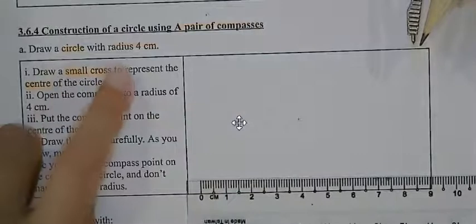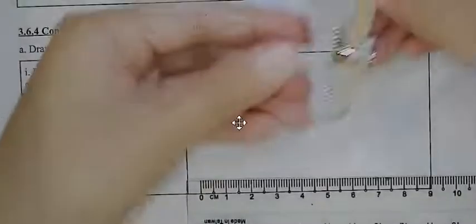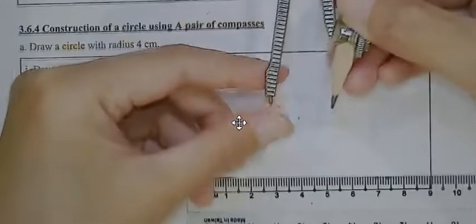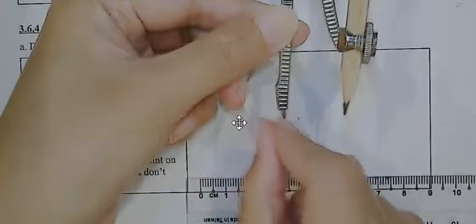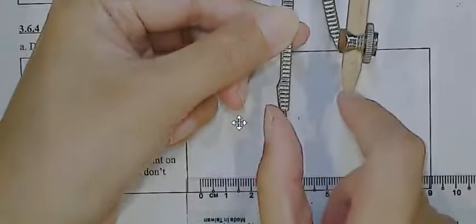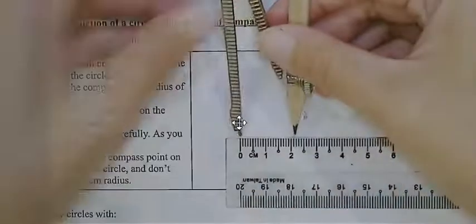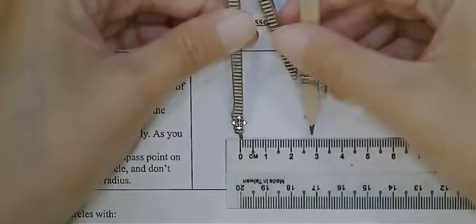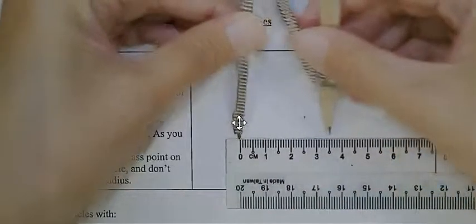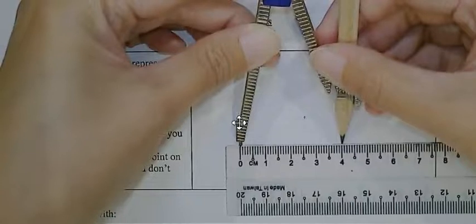A circle with a radius 4cm. Radius always starts from the fixed point all the way to this circumference. So let's measure 4cm. Fixed point at zero, 4cm at the circumference, at the pencil here.